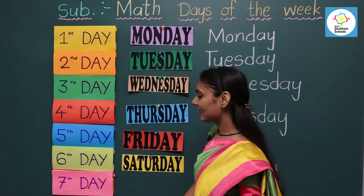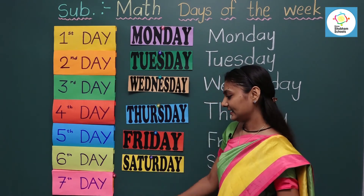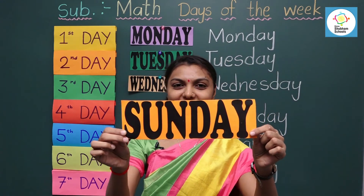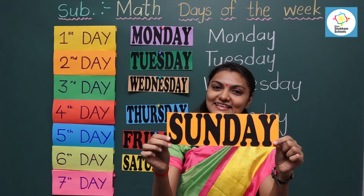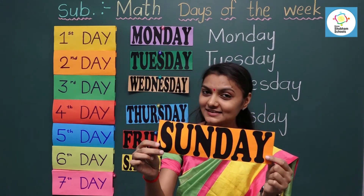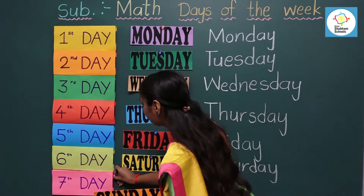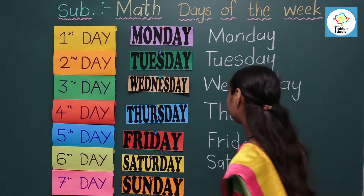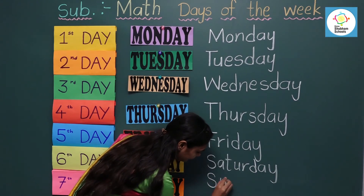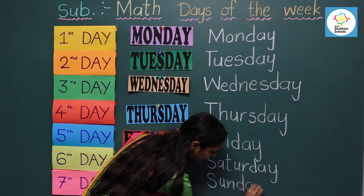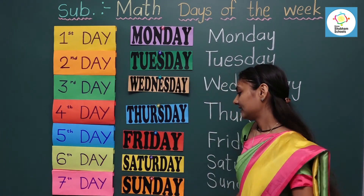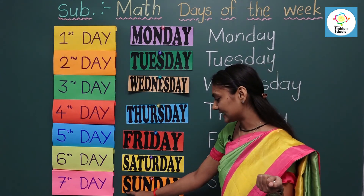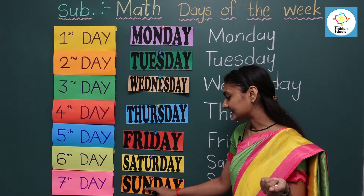And the last one — the seventh day of a week. Now which day is remaining? It's Sunday. Sunday is a holiday. S-U-N-D-A-Y. Sunday is the seventh day of a week and it is the last day of a week. Now it's your turn. Read the spelling: S-U-N-D-A-Y. Sunday.